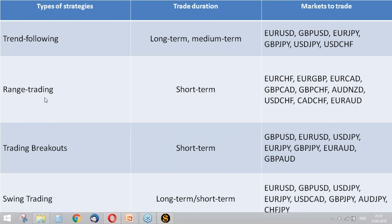When speaking about range trading strategies, there are numerous indicators which measure overbought and oversold levels, like the Relative Strength Index, stochastic, momentum, and others. These strategies work well when the market has no definable and consistent trend.